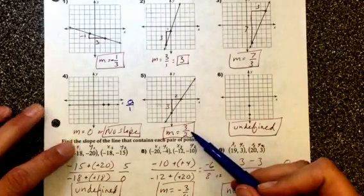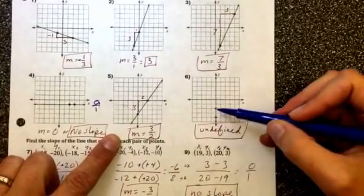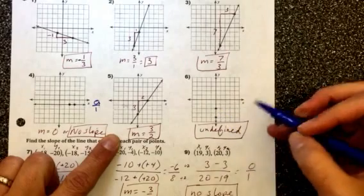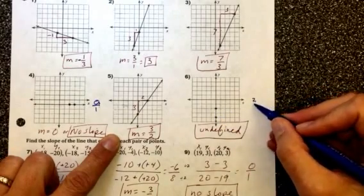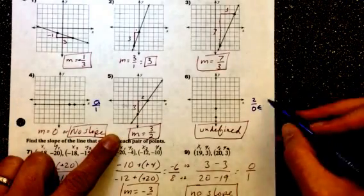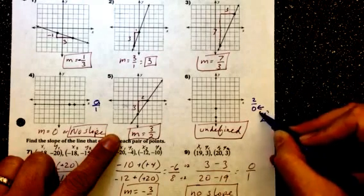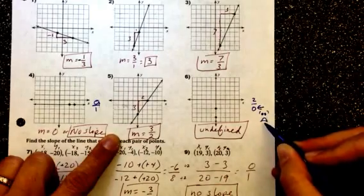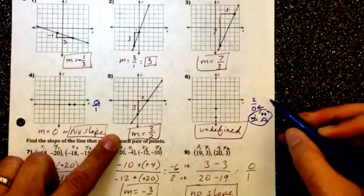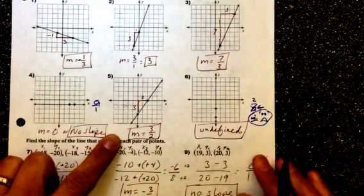For number five, rise over run is three over two. And then for number six it's a little trickier. This is a vertical line so your slope would have a rise but no run. You can't divide by zero, that is horrible and everybody just wants to cry because it makes the universe explode. So we call it undefined because we don't even write this, it's so horrifying.